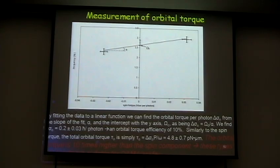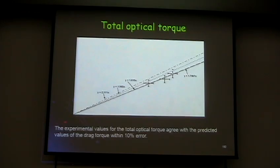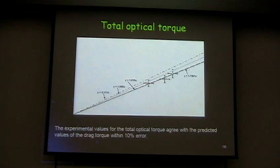The total orbital torque experimental values agree with predicted values within 10%. For some, 10% sounds like large uncertainty, but here many elements are not well characterized — particularly particle size, which has a very strong dependence on particle diameter. We decided 10% accuracy was acceptable.